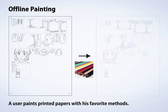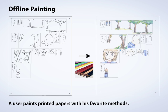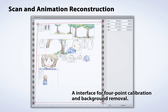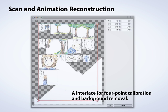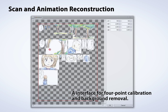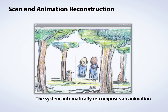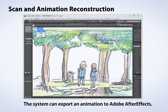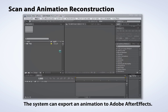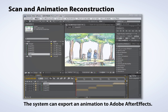Then the user paints printed papers with their favorite methods offline. Our system has an interface for four-point calibration and background removal for scanned images. Then the system automatically recomposes the animation. Our system can export an animation to Adobe After Effects.